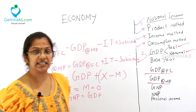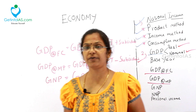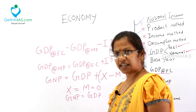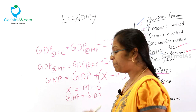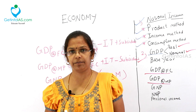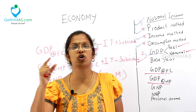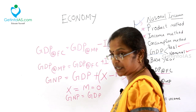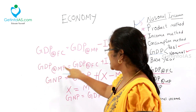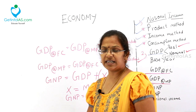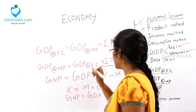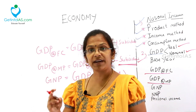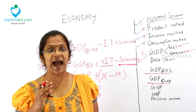GDP at market price — the product has come out of the factory. Once it comes out, you are levied with indirect tax, so you add indirect tax. But when the government gives you a subsidy, you will not charge that amount on the consumer, so you subtract the subsidies. GDP at market price equals GDP at factor price plus indirect taxes minus subsidies.